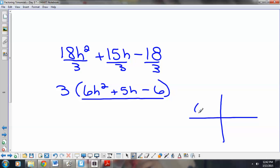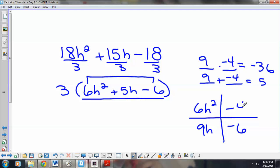So, we'll try it. 6h squared and negative 6. I'm looking for two numbers that multiply to negative 36. To get that out of 6 times negative 6. And, we want those same two numbers to add to positive 5. So, I'm looking for two numbers that multiply to negative 36 and add to 5. Those numbers are 9 and negative 4. 9h and negative 4h. So, let's factor each row and column.